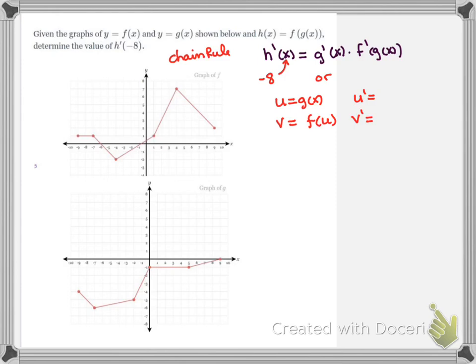Now you can either think of the derivative of h as the derivative of the inside times the derivative of the outside with the inner plugged back in, or with u as the inner, v as the outer, u prime times v prime, either way. I'm going to go with that because I like it.